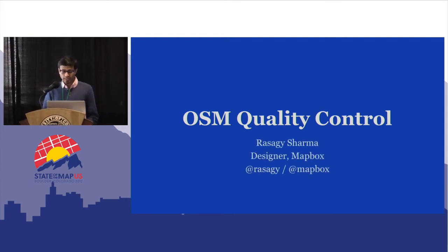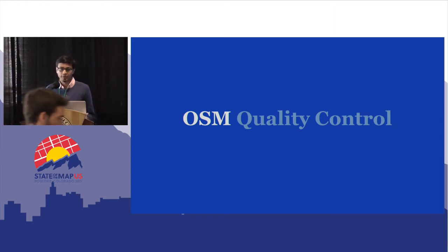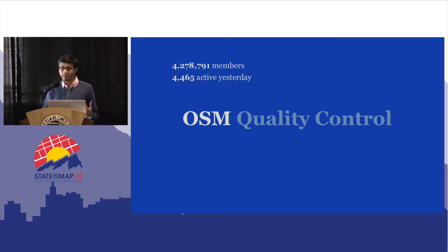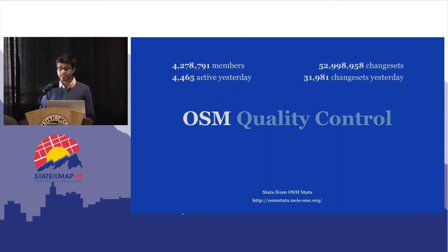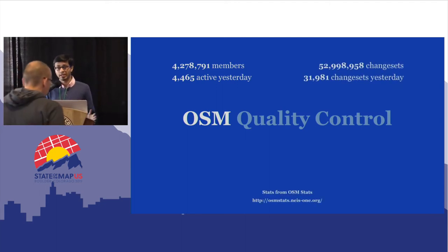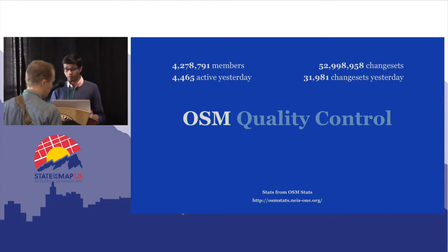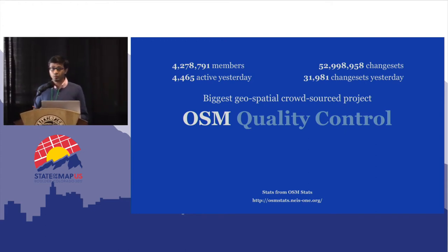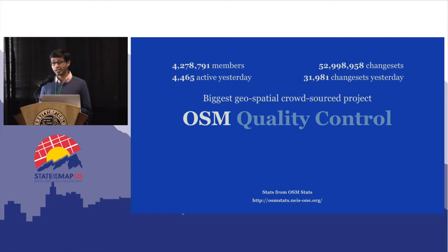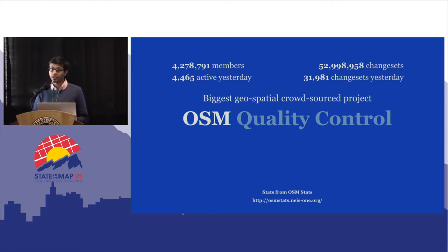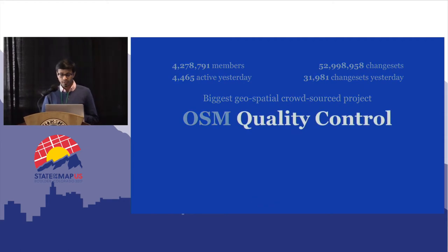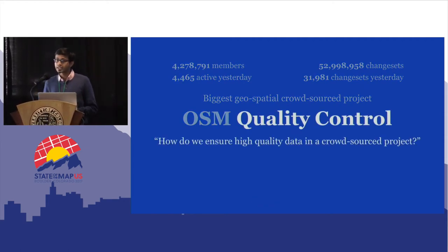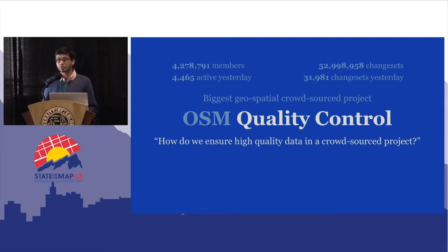So we're talking about OSM quality control, and it's always important to first get the context of what OSM is today. Quick numbers: 4 million members, 4,400 were active yesterday, which meant that out of 52 million changesets, 31,000 changesets were made yesterday. This means OSM is in a way the biggest geospatial crowdsource project, and with so many changes being made each day, there's far more need to figure out the quality of those changes.